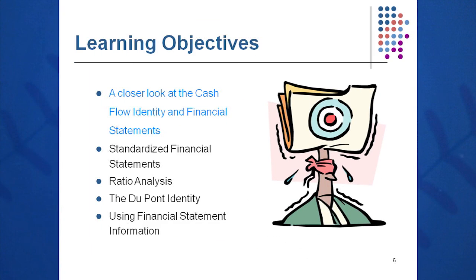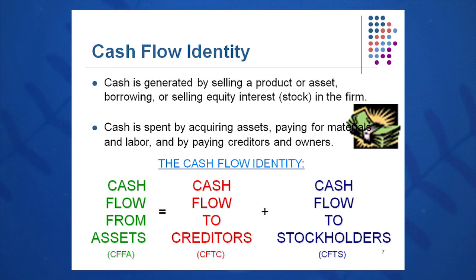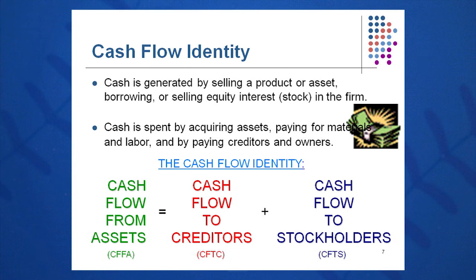Learning objective one: let's look at the cash flow identity. Remember from session two, cash flow in equals cash flow out — cash flow from assets equals cash flow to creditors plus cash flow to stockholders. That's what a company does: it spends cash and it produces cash. If it doesn't have cash, it quickly becomes a failure. So we acquire assets, pay our bills, pay creditors, pay owners — and this is a use of cash. Hopefully, we have higher sources of cash, which will allow us to do all of that successfully.